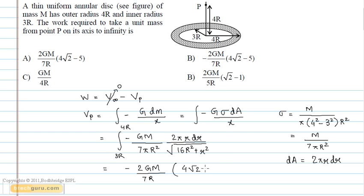Substituting the value of Vp in the work equation, we get work done is equal to 2 gM upon 7R into 4 root 2 minus 5. Therefore, option A is the correct answer.